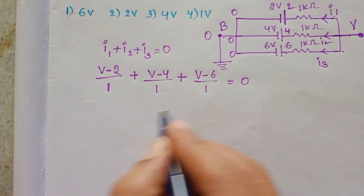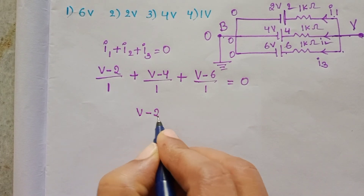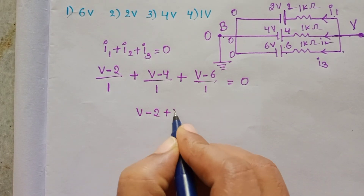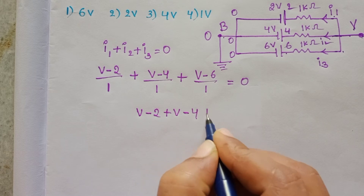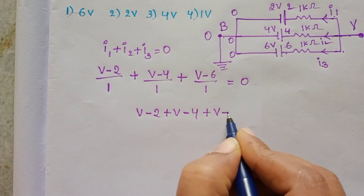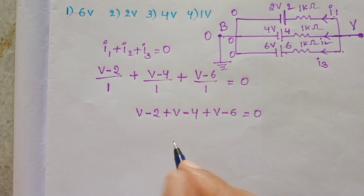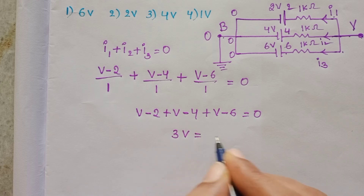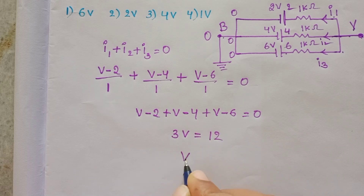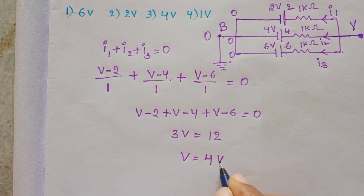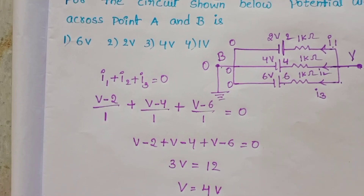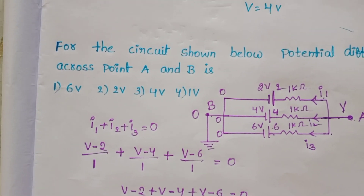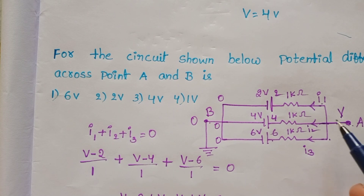Now simplify: (V minus 2) plus (V minus 4) plus (V minus 6) equals 0. Then 3V equals 12, so V equals 4 volts. Therefore the potential difference across points A and B is 4 minus 0 equals 4 volts.